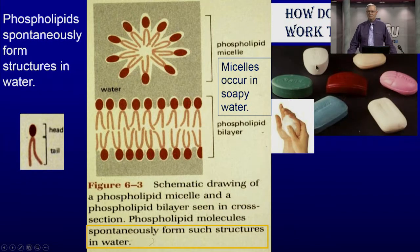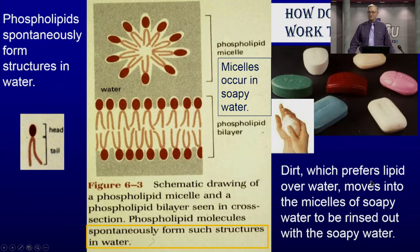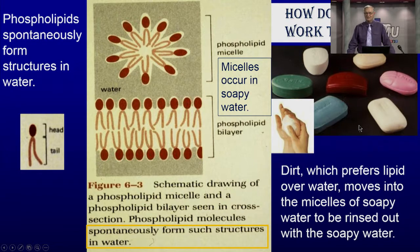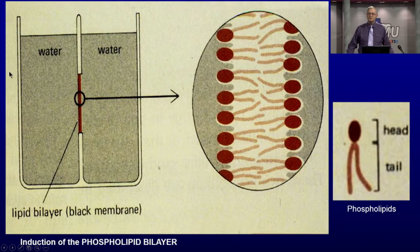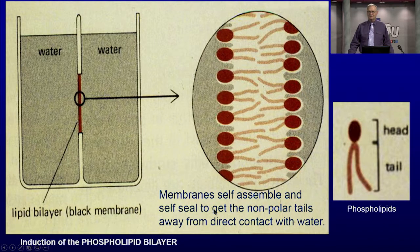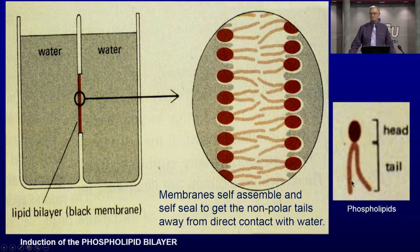How does soap work? Soap makes micelles in water. Dirt, which likes oil and lipid, moves into the micelle. When you rinse, you rinse out the micelles holding the dirt — that's how soap works. If you throw phospholipids into a chamber with water, they will make a lipid bilayer because the tails try to run from the water. Membranes are self-assembled and self-sealed — we're able to live because our membranes are self-sealed.